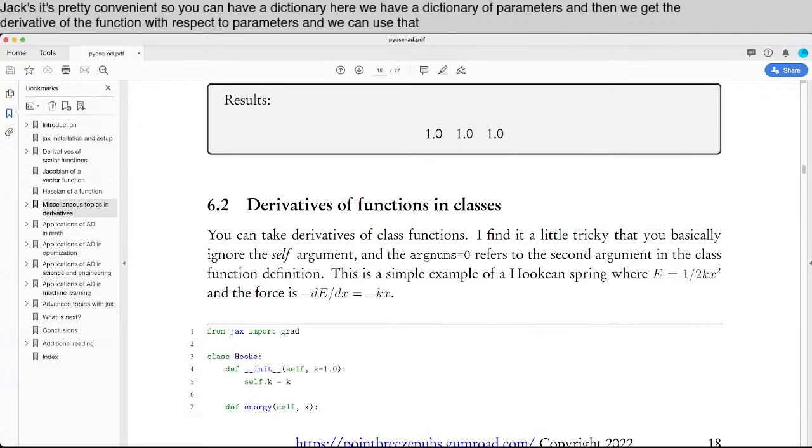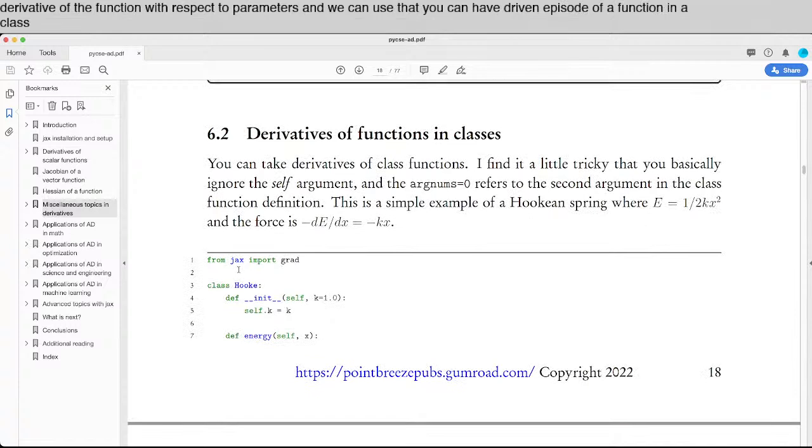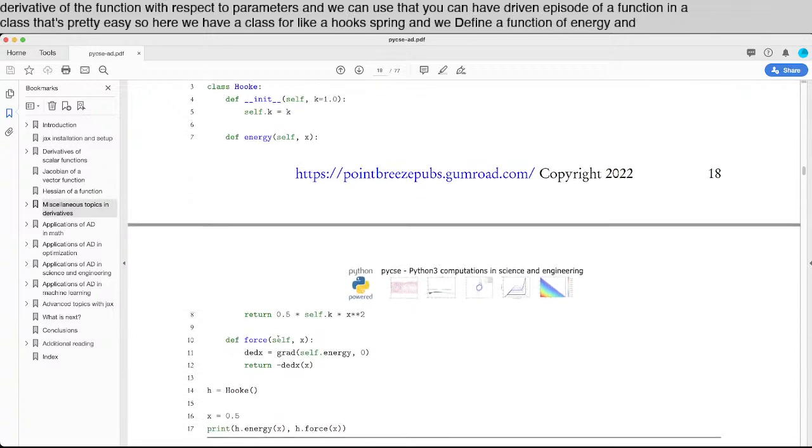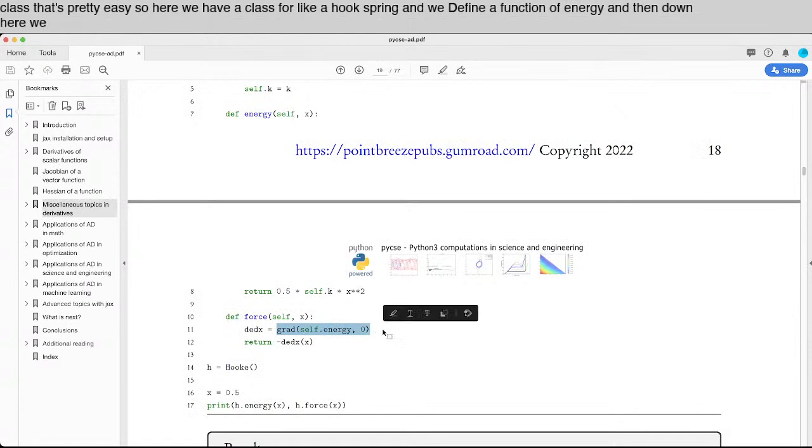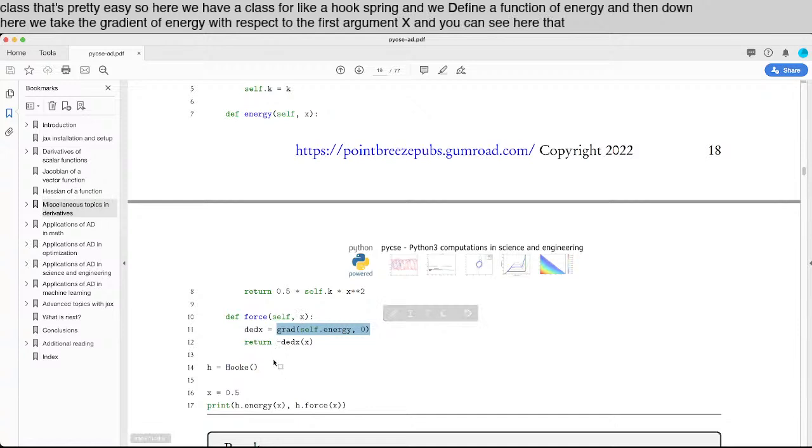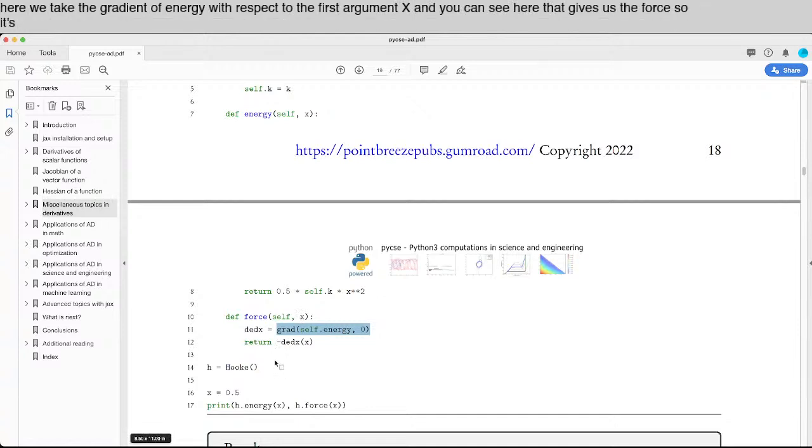You can have derivatives of a function in a class, that's pretty easy. So here we have a class for like a Hooke spring. And we define a function of energy. And then down here, we take the gradient of energy with respect to the first argument x. And you can see here, that gives us the force. So it's very easy to write programs that use derivatives.